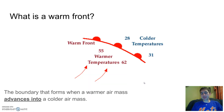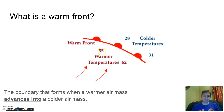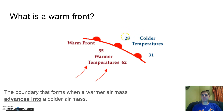One more thing about this picture: take note that when you see the semicircles on one side, that's my sign that the colder air is on that side. The semicircles indicate the direction of motion of the warm front, and the warmer air is behind it.